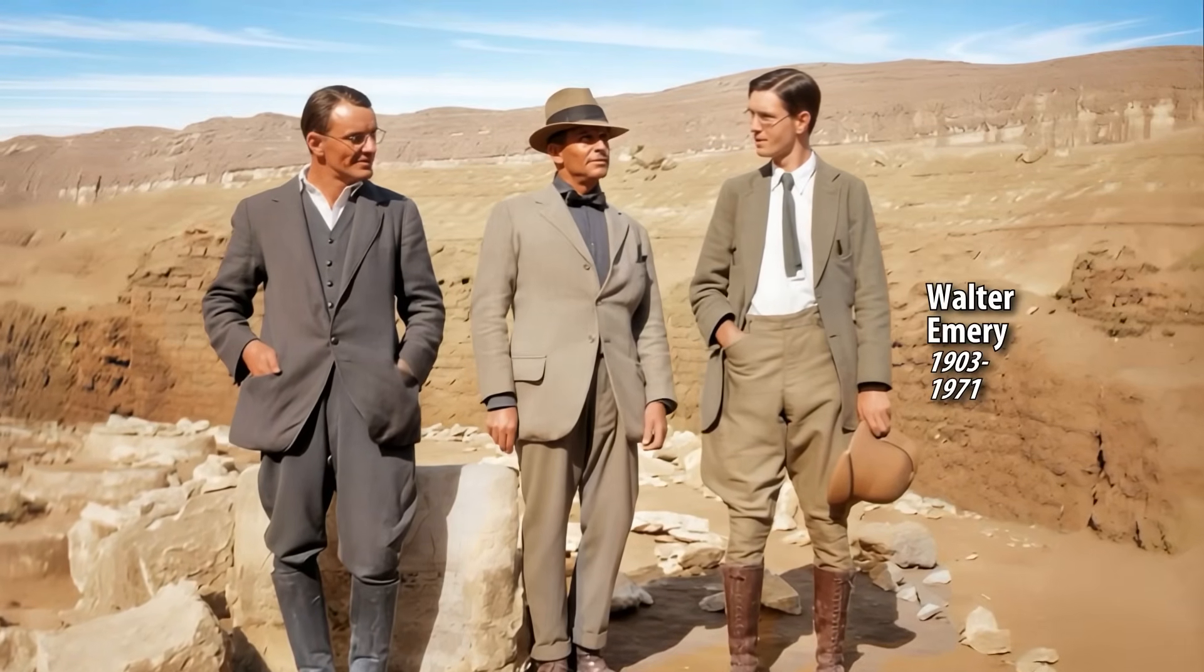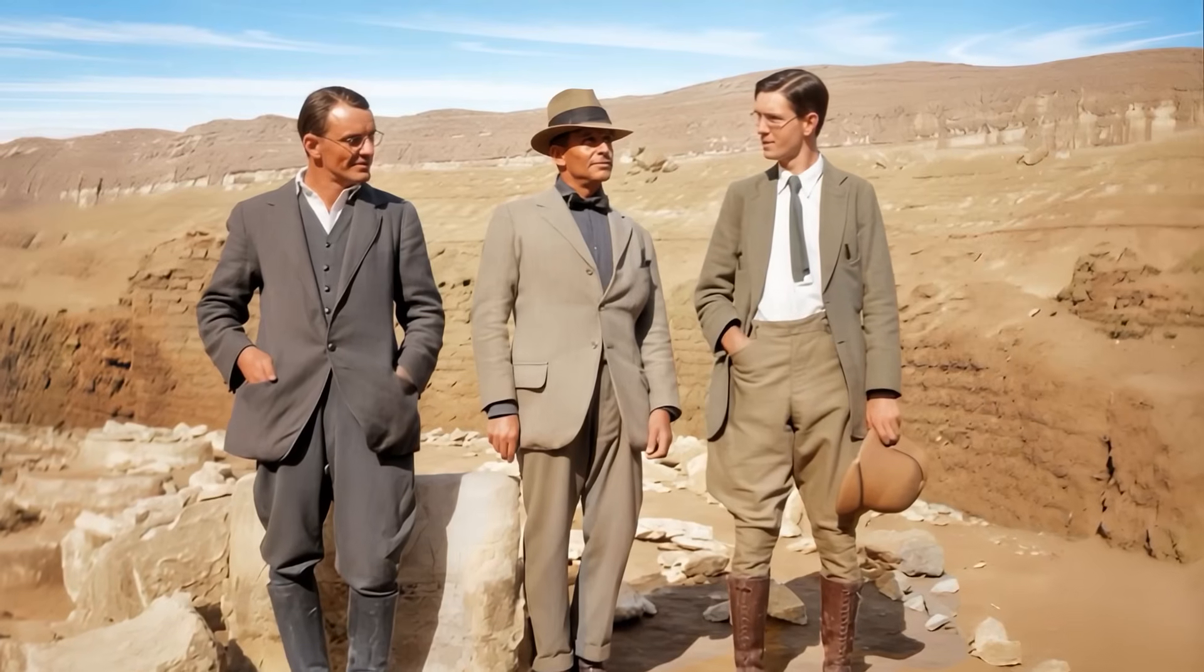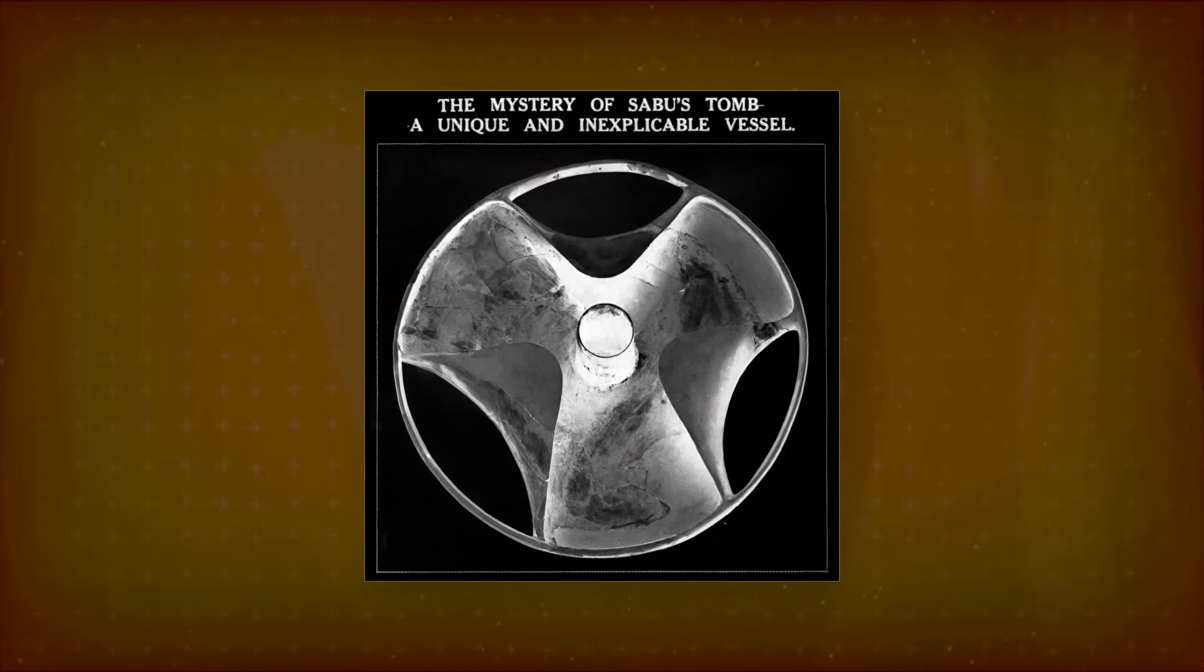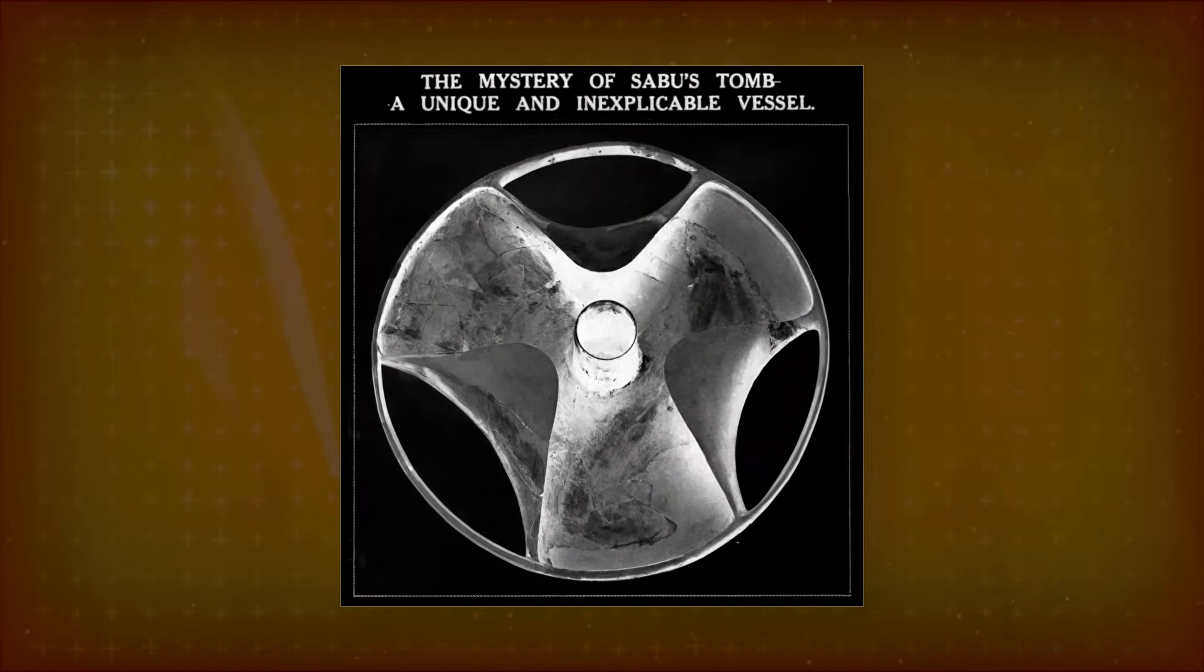In 1936, the archaeologist Walter Emery found an ancient mystery. In a First Dynasty tomb, he found a peculiar stone object with three thin folded lobes.